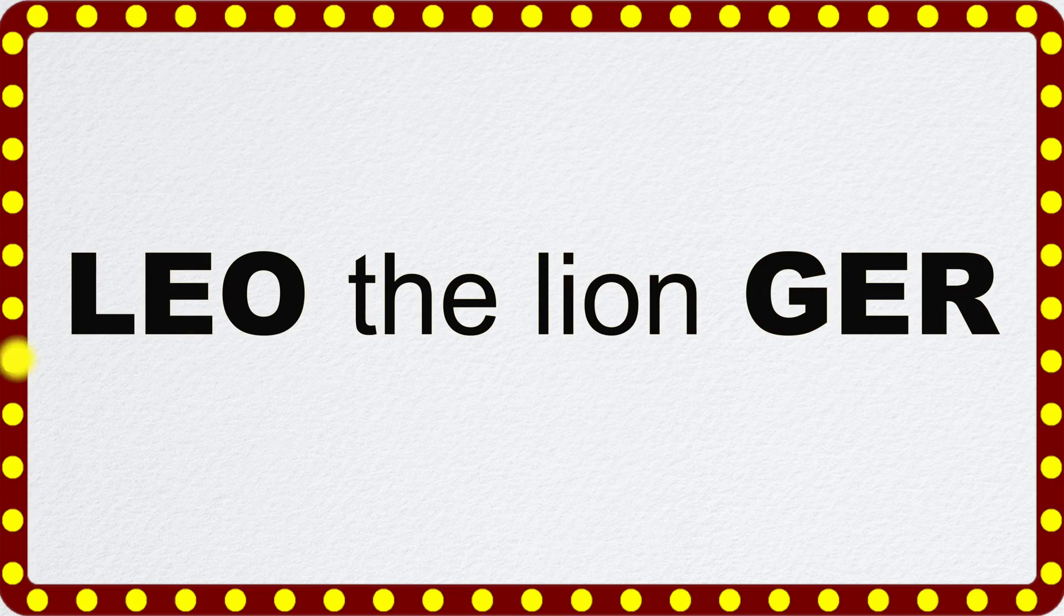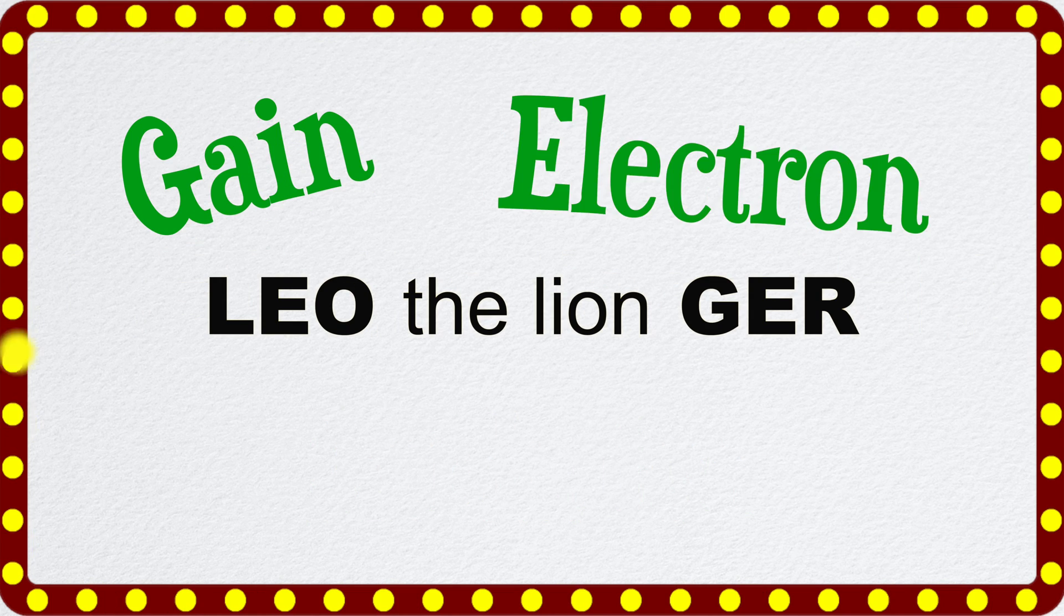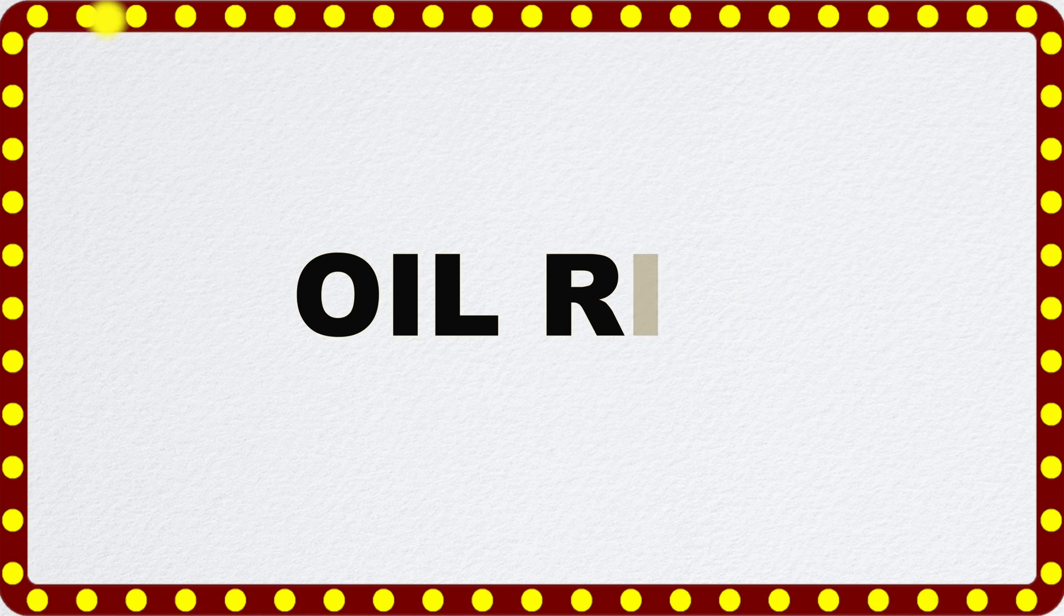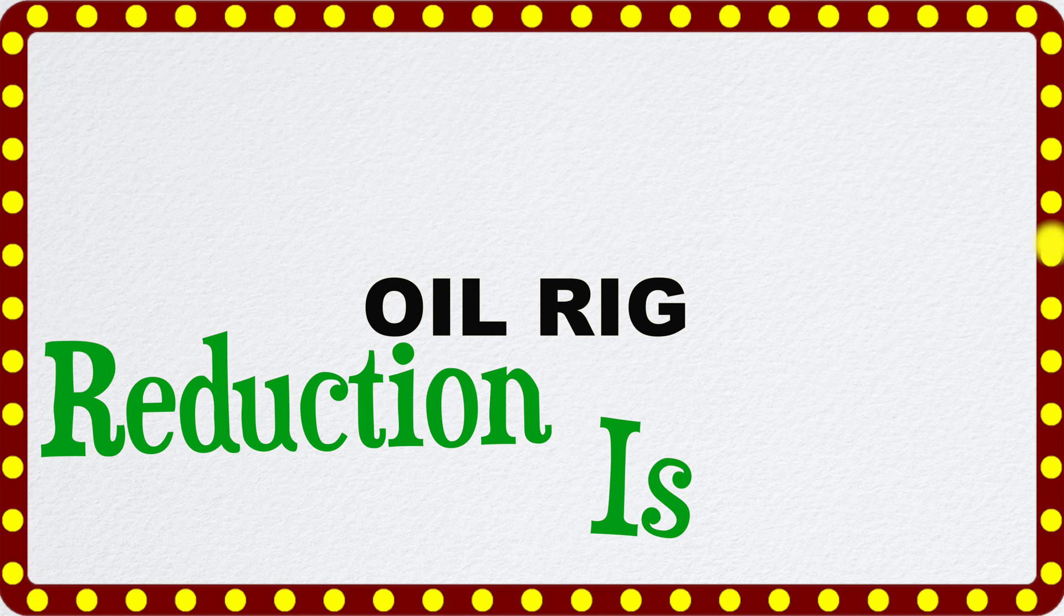Let's just remember the acronym Leo the lion GR. What this stands for is loss of electrons is oxidation, and gain of electrons is reduction. Or you can remember it as oil rig, which stands for oxidation is loss, reduction is gain. That is loss and gain of electrons, of course.